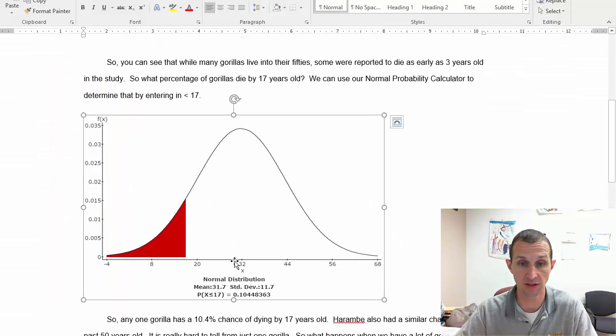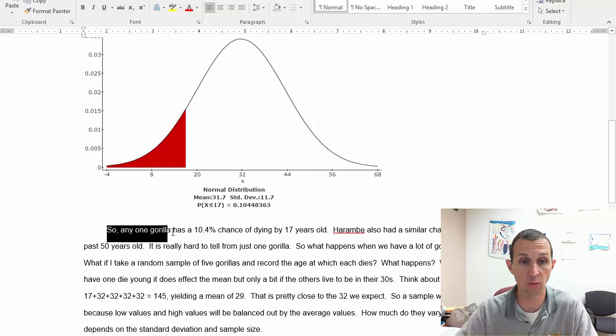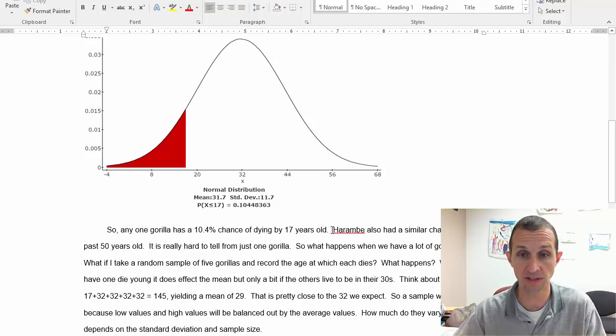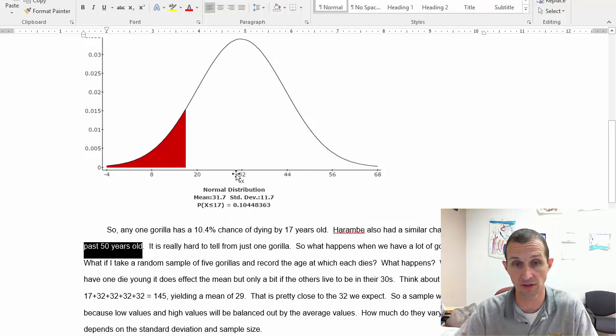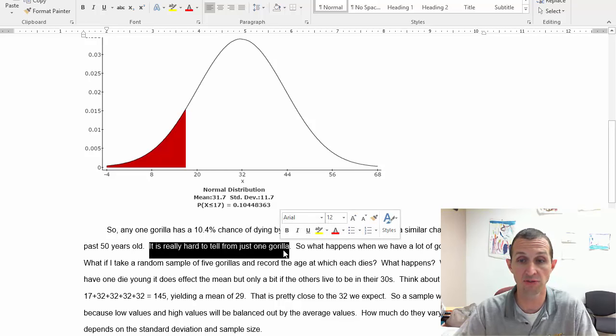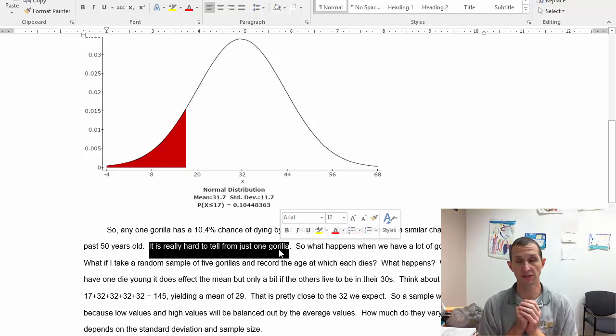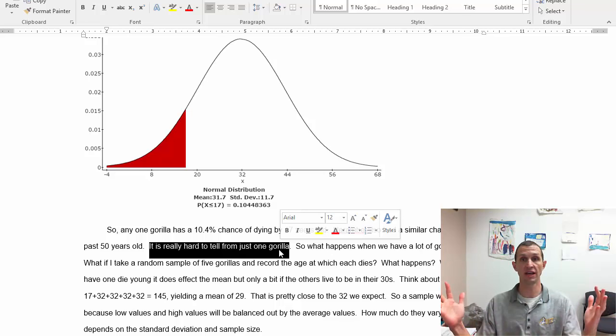So let's go back to the Word document and so there it is. So any one gorilla has a 10.4% chance of dying by 17 years old. Not a lot but not a tiny bit, you know, basically one in ten. Harambe also had a similar chance to live past 50 years old. So it's really hard to tell from just one gorilla because when you have a sample size of one, when you have anecdotal evidence of one story, you get a lot of variability, a lot of stuff can potentially happen, right, good stuff, bad stuff, all kinds of stuff.